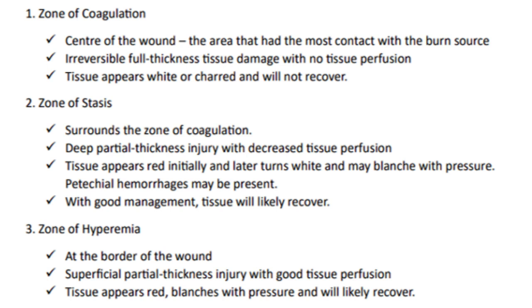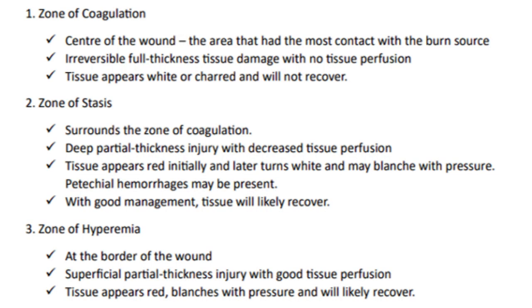Burns can be divided into three zones. The zone of coagulation is the center of the wound — it had the most contact with the burn source. It is irreversible full thickness tissue damage with no tissue perfusion; the tissue appears white or charred and will not recover. The zone of stasis surrounds the zone of coagulation. It is a deep partial thickness injury with decreased tissue perfusion, appearing red initially then turning white, and may blanch with pressure. With good wound management, this tissue will likely recover.